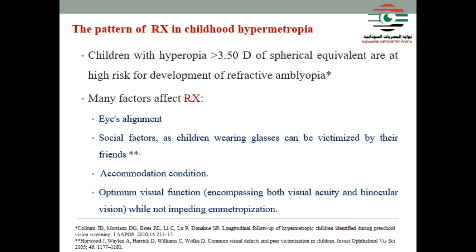What is the basis for prescribing Rx in childhood hypermetropia? This is an important question. Children with hypermetropia more than 3.5 diopters of spherical equivalent are at higher risk of developing refractive amblyopia — this is a critical point. There are many factors for our Rx: eye alignment, social factors such as children wearing glasses being victimized by friends, accommodative condition, and optimum visual function including visual acuity and binocular vision.